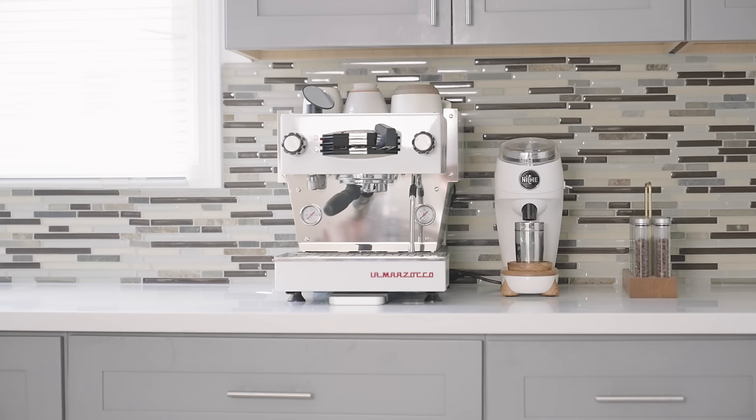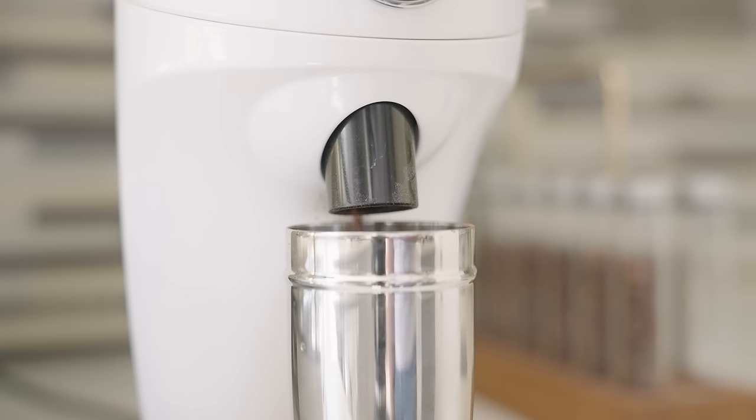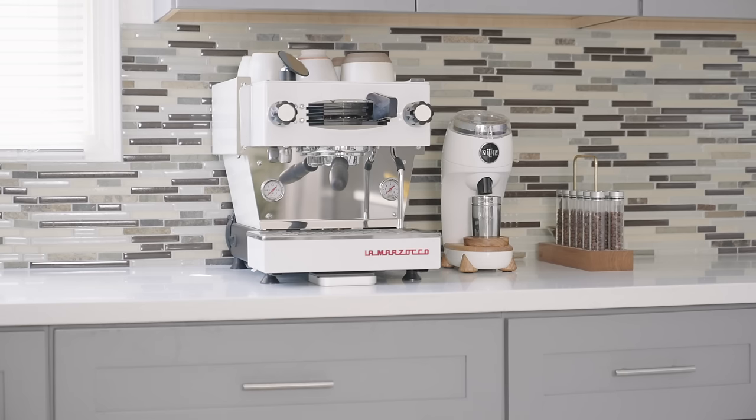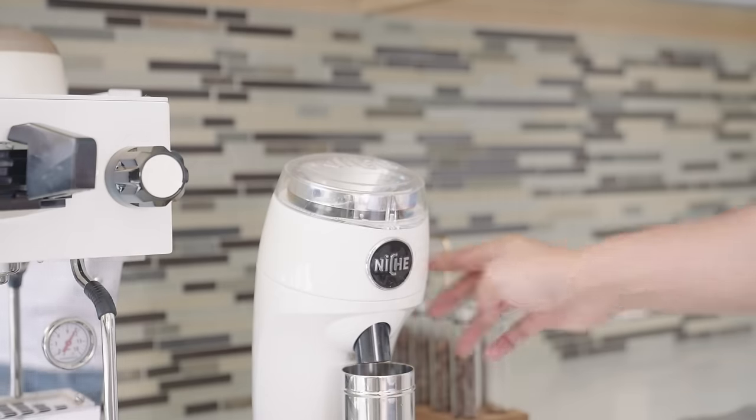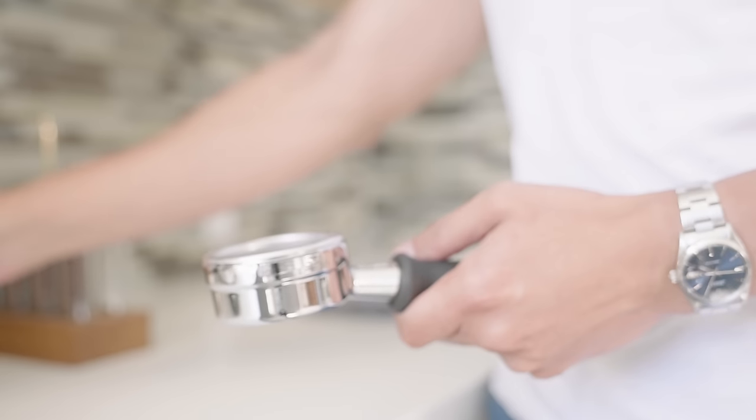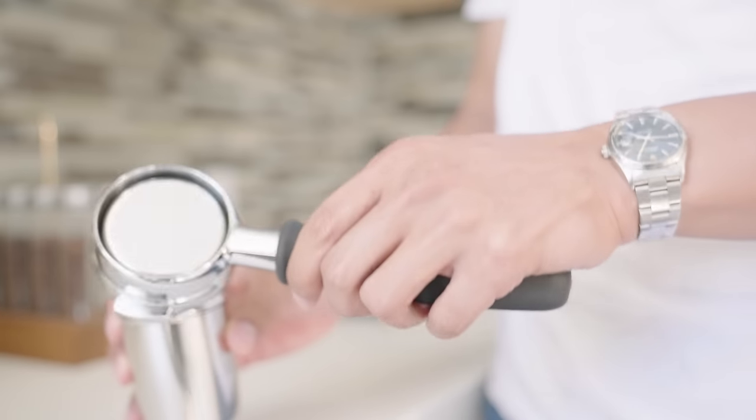Onto the main event, the heart of the setup is the Niche Zero grinder and the La Marzocco Linea Mini. The Niche Zero grinder is pretty much the go-to single dose grinder and rightfully so. 63 millimeter conical burrs deliver consistently great coffee and the workflow is perfect. I wish more grinder companies would follow the Niche Zero's ergonomics.